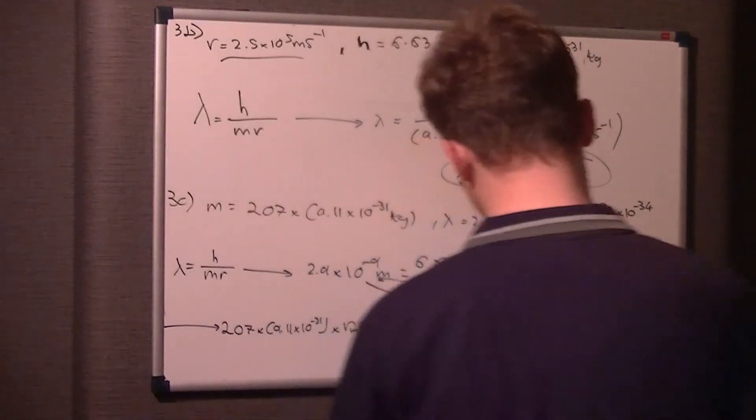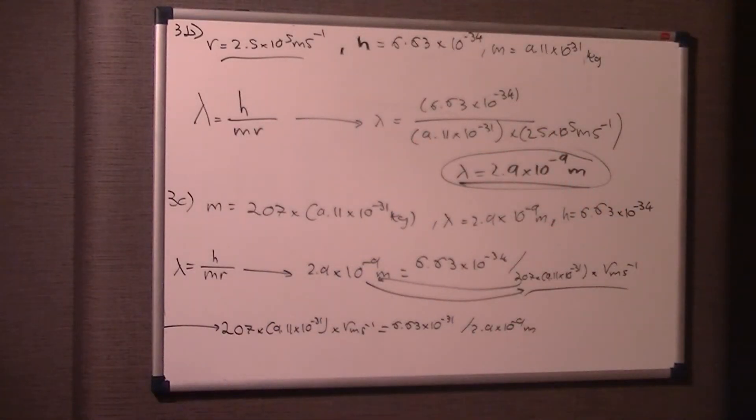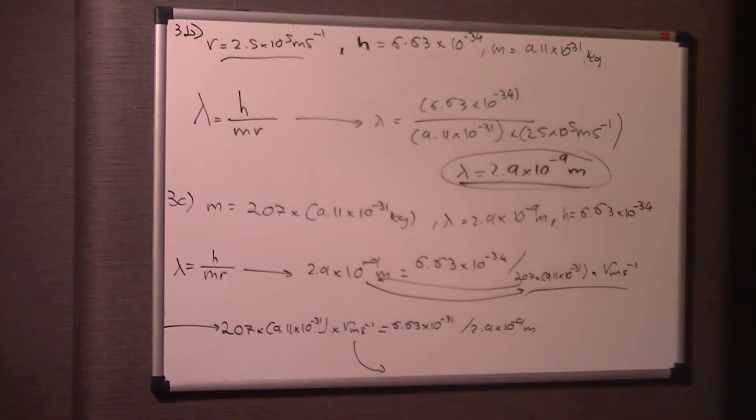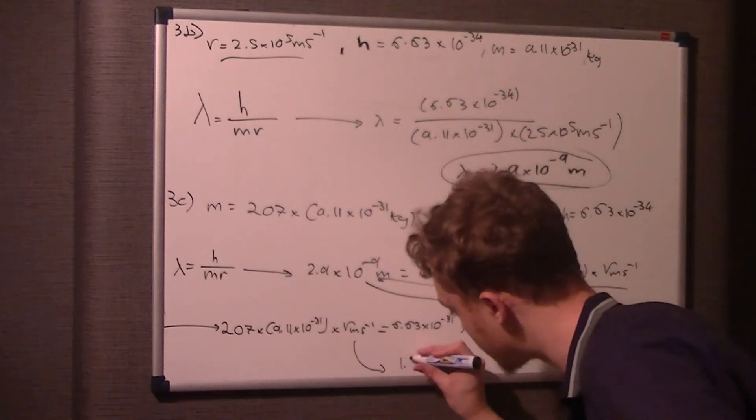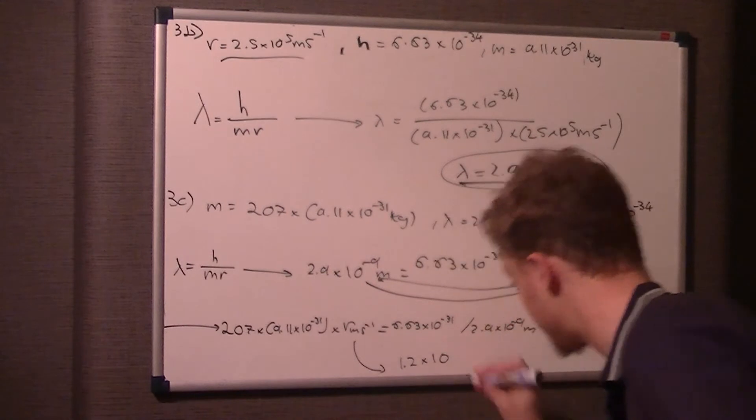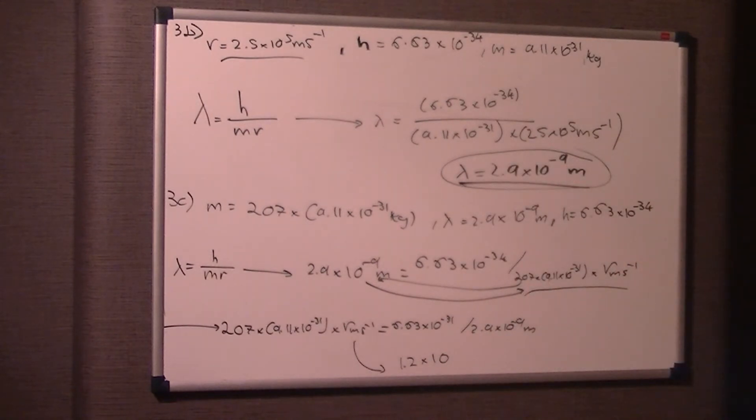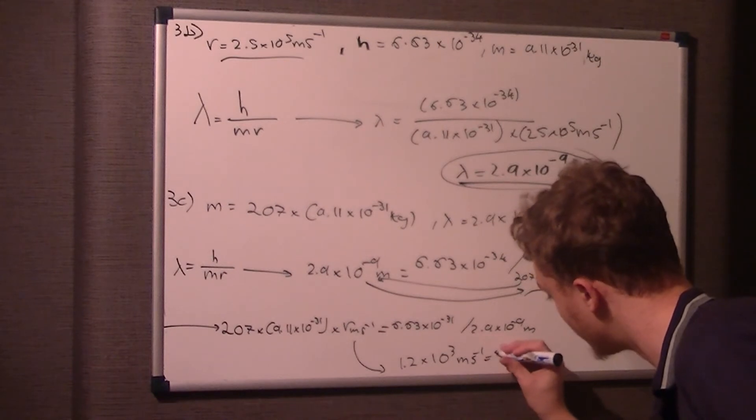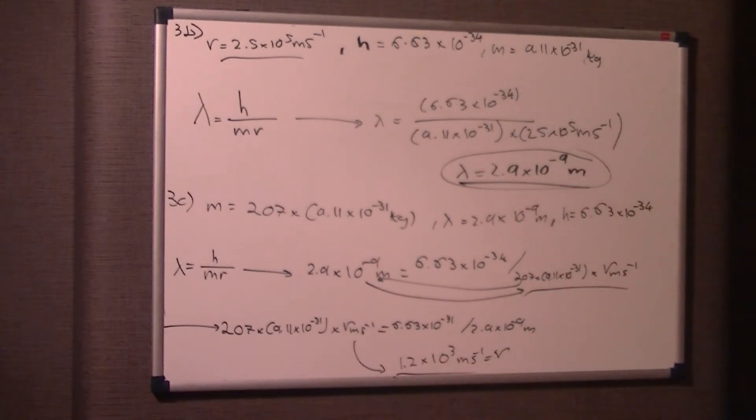Then simplify for v, which I'm assuming you're quite capable of doing. You get v meters per second equals 1.2 times 10 to the 3 meters per second. That's the speed the electrons would have to be traveling at to have the same wavelength as the electrons.